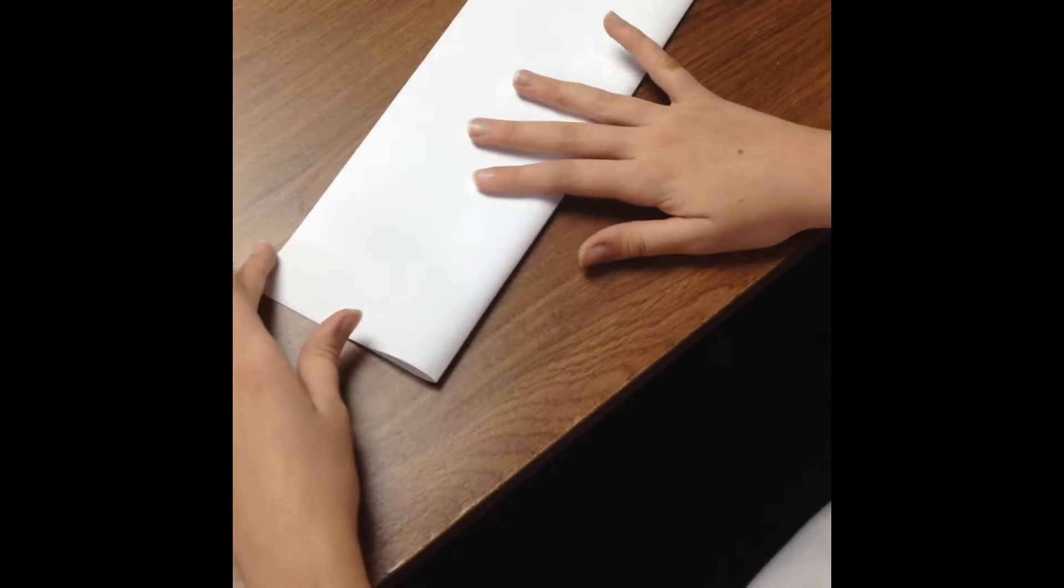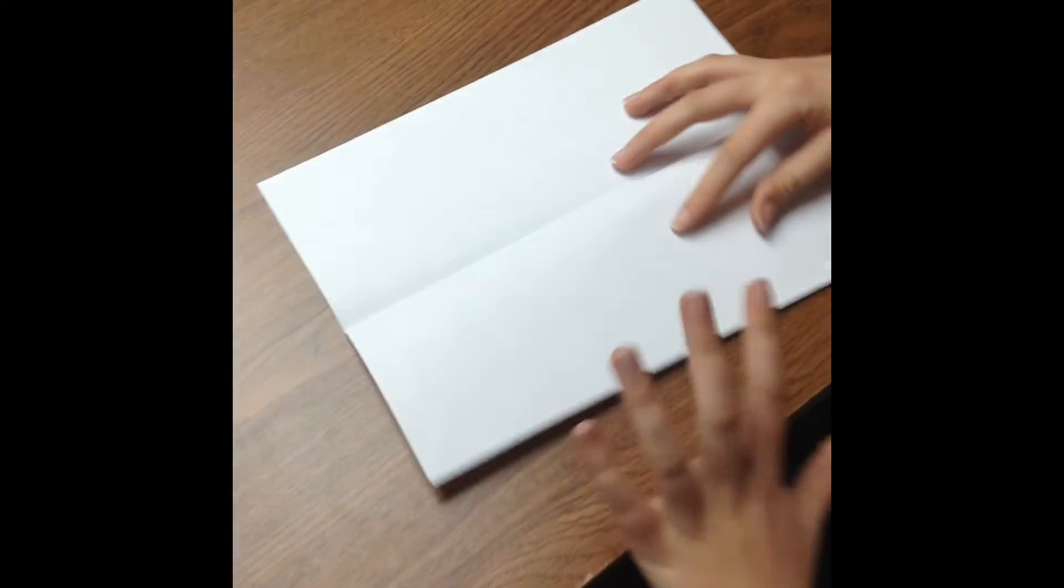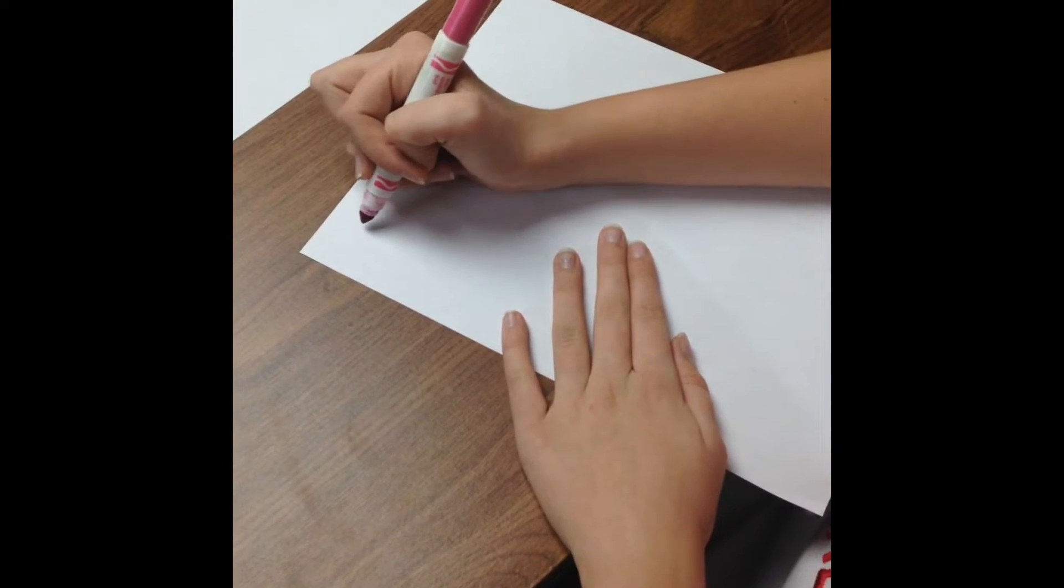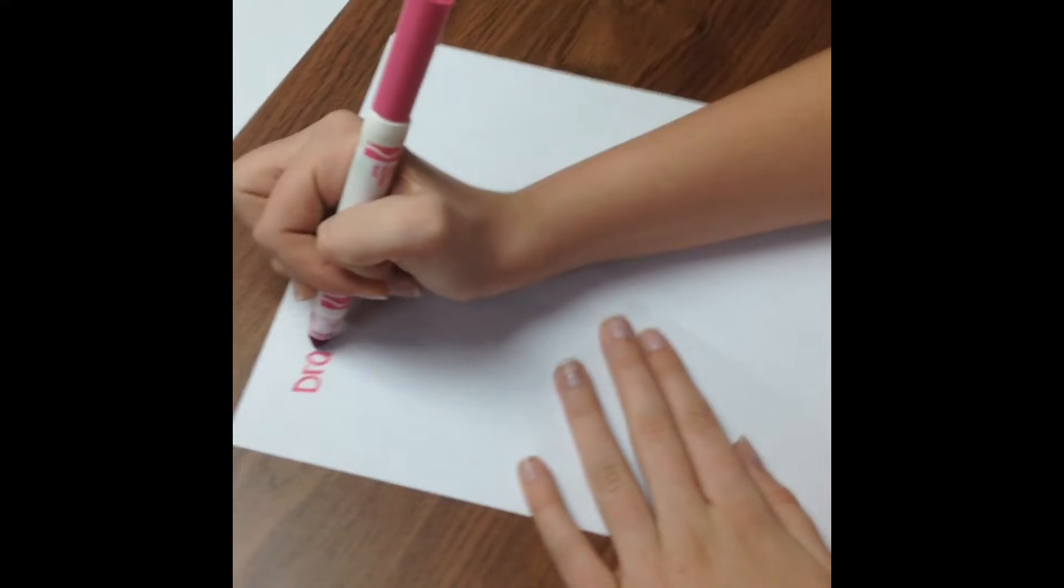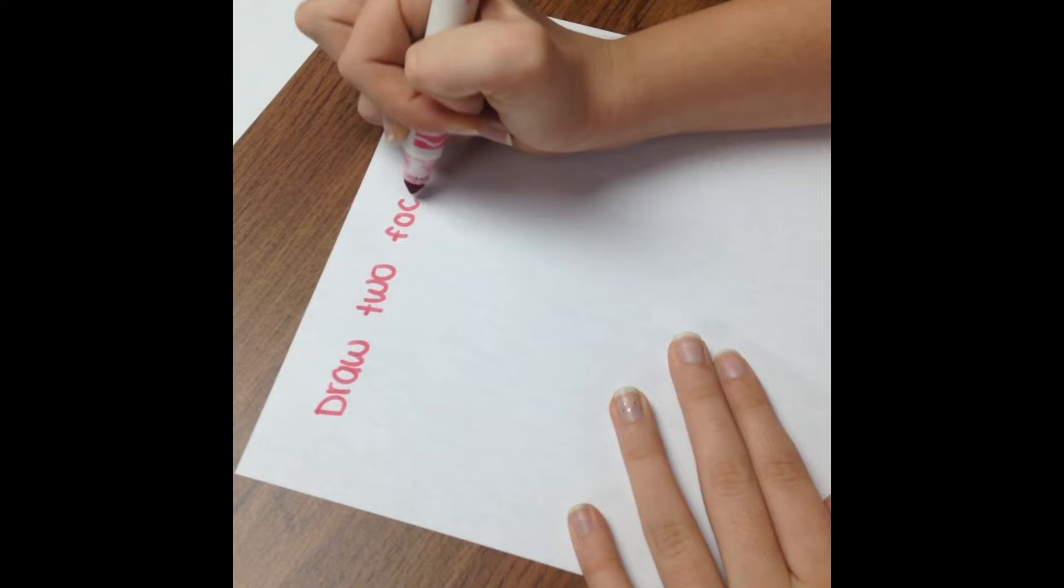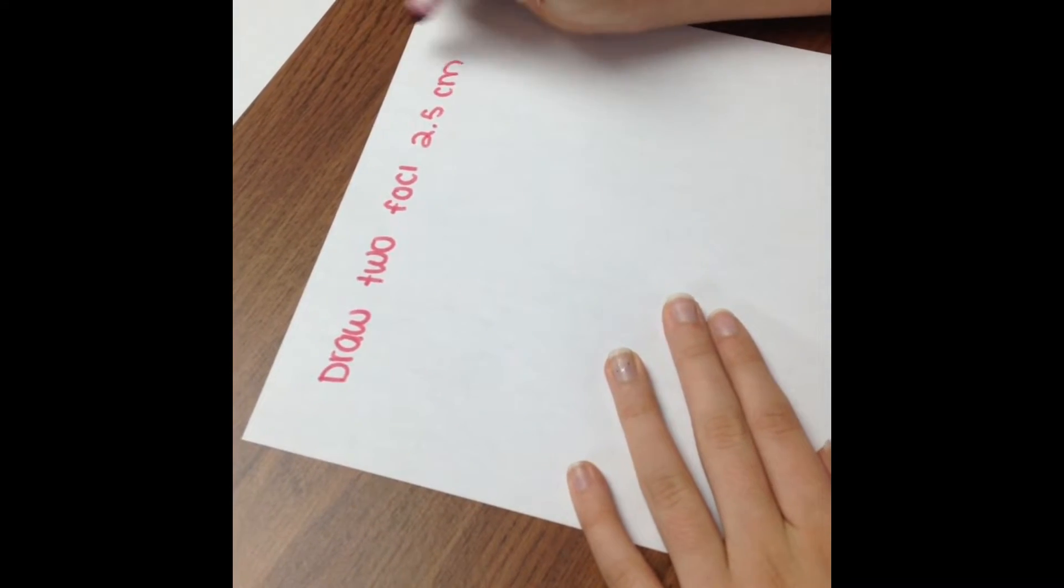The first part needed to create an ellipse is folding our white blank paper in half in a hot dog style. This will give us a straight line through the middle of our paper. In order to actually create an ellipse we will need a problem. The problem that I have shown today says draw two foci 2.5 centimeters apart.